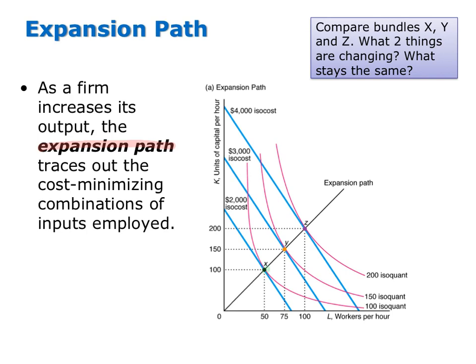Imagine the firm is initially producing 100 units of output at the lowest possible cost by employing 50 workers per hour and 100 units of capital per hour. The cost of this input bundle is $2,000 — the minimum cost of producing 100 units of output. Now imagine the firm wants to expand its output from 100 to 150 units. As shown on the graph, the new cost-minimizing bundle of inputs is bundle Y, at which point the firm employs 75 workers per hour and 150 units of capital per hour. The cost of this bundle is $3,000 — the minimum cost of producing 150 units of output.